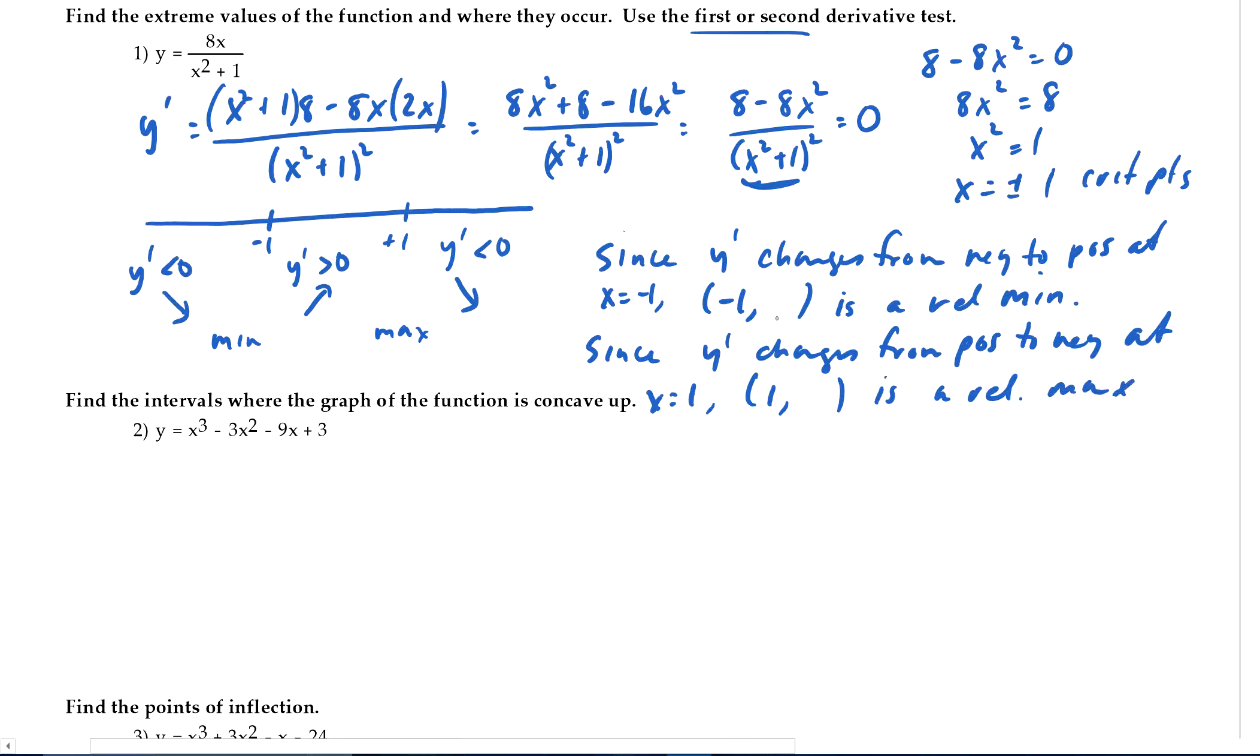So how do I find the y values? Plug them into the original equation. So, 8 times negative 1 is negative 8 over 2, so negative 4. And then plug in 1, 8, positive 8 over 2 is 4. So there we go.